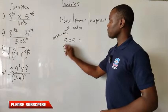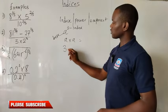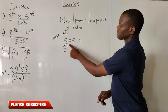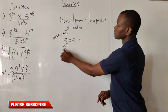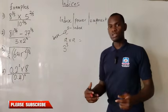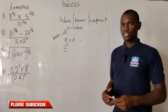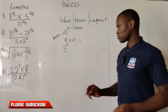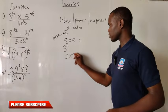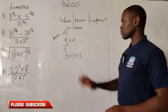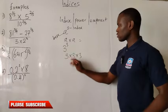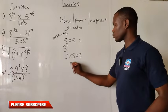The same thing happens when I have a number. Let's say I have 3 raised to the power of 3. My index is 3. This 3 shows the number of times the base 3 will multiply itself to obtain the product. So I will have 3 times 3 times 3, which gives us 27.